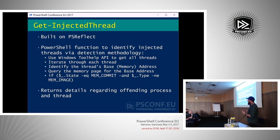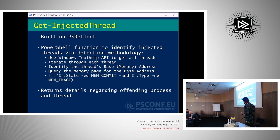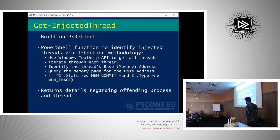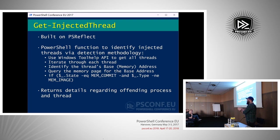Get-InjectedThread is built on PSReflect, which allows you to use Reflection to call Windows APIs through PowerShell. It works by using the Windows ToolHelp API to gather all threads on the system, then iterating through them. You check each thread's base address and the memory page information about that base address — checking whether that memory page is committed, meaning currently allocated, and whether it is backed by a memory image, meaning a file on disk. If a thread's base address memory page is allocated and not backed by a file on disk, it is some sort of code injection.